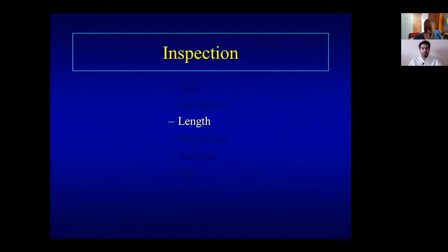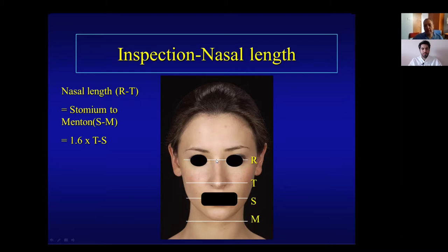The length of the nose is from the radix to the tip. A lot of patients say their nose is long — the easy way to assess this is to compare the nasal length to the distance from the stomion to the mentum (lips to chin): they should be equal. For a more accurate measurement, use the formula: 1.6 multiplied by the tip-to-stomion distance should equal the nose length. This is something you can do quickly in the clinic.